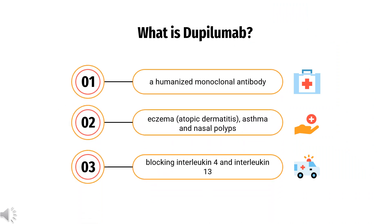What is Dupilumab, and what class of drug is it? Dupilumab, sold under the brand name Dupixent, is a monoclonal antibody blocking interleukin-4 and interleukin-13, used for allergic diseases such as eczema, atopic dermatitis, asthma, and nasal polyps which result in chronic sinusitis. It is also used for the treatment of eosinophilic esophagitis and prurigo nodularis. Dupilumab is the first treatment for eosinophilic esophagitis approved by the U.S. Food and Drug Administration (FDA), and the FDA considers it to be a first-in-class medication.